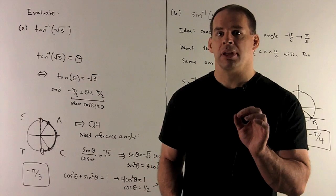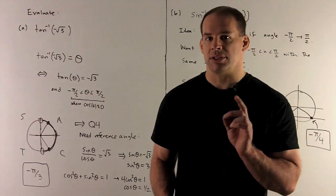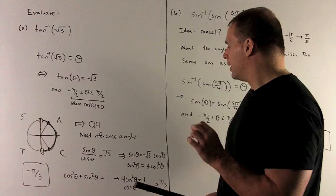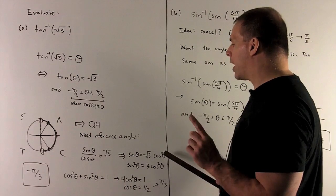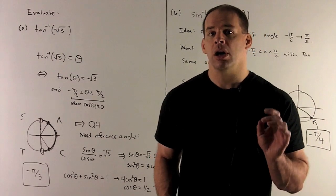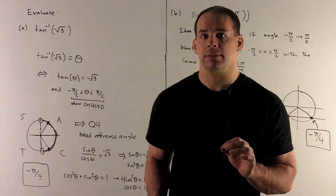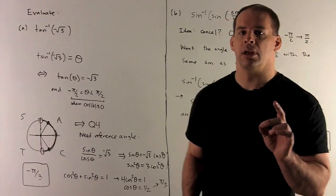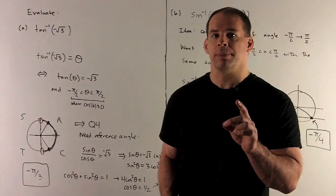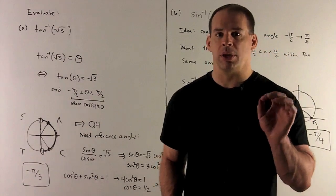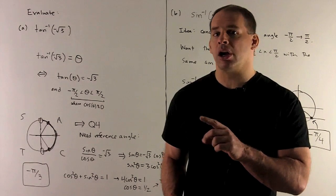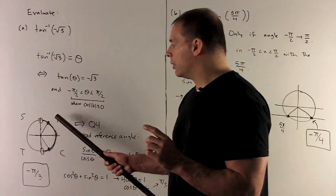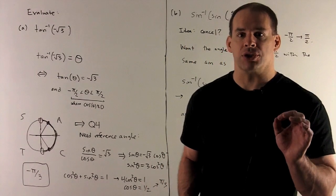Now I want to find the reference angle. We have tangent theta equals minus square root of 3, so sine theta over cosine theta equals minus square root of 3, meaning sine theta equals minus square root of 3 times cosine theta. Substituting into cosine squared theta plus sine squared theta equals 1, we get 4 cosine squared equals 1, so cosine equals plus or minus one half. Since cosine is the x-value on the unit circle, one half is smaller than square root of 3 over 2, so the higher angle — pi thirds — is our reference angle. Pushing that down to quadrant four gives minus pi thirds.